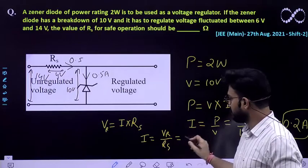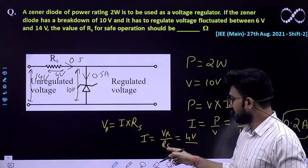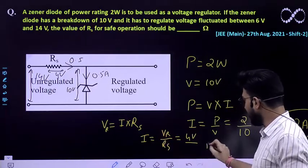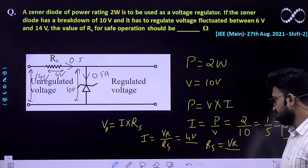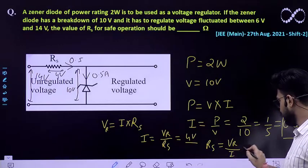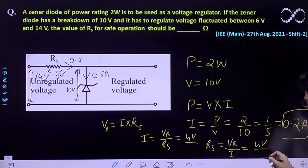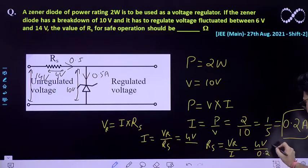So Vr is 4 volt. We have to find out Rs. So Rs is Vr by I. So it is 4 volt by what is current over here? Current is 0.2. So you will be getting 20 ohm.